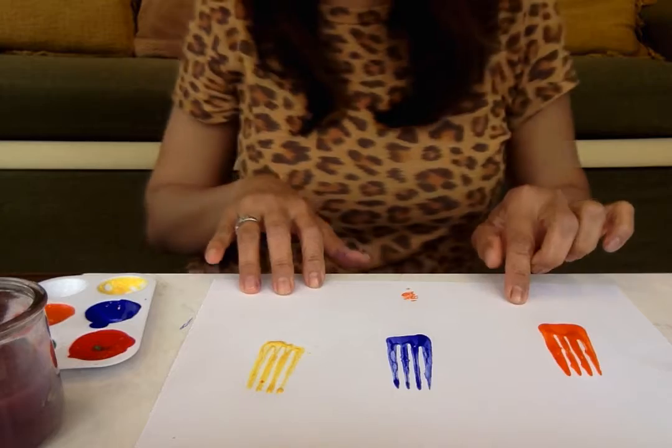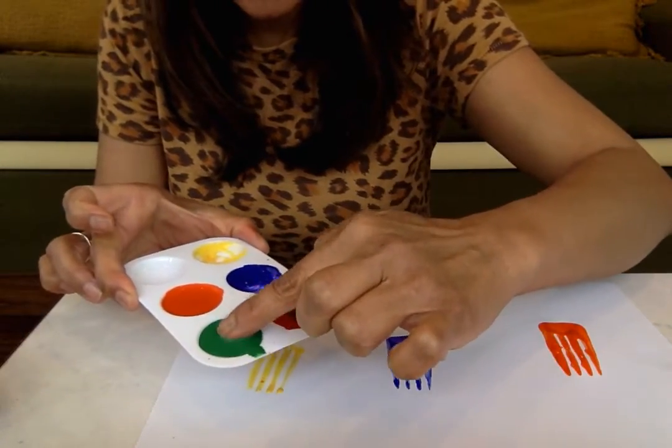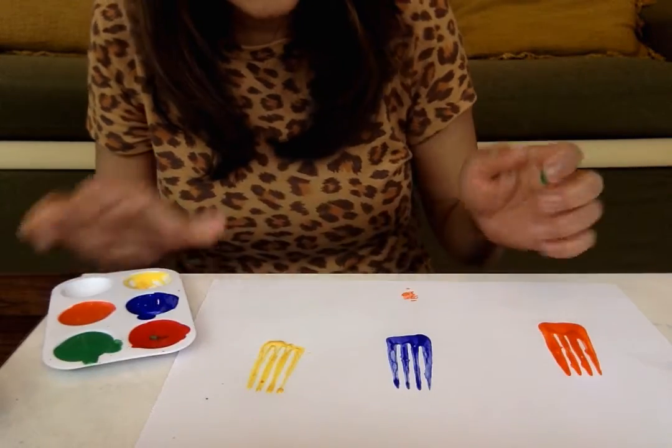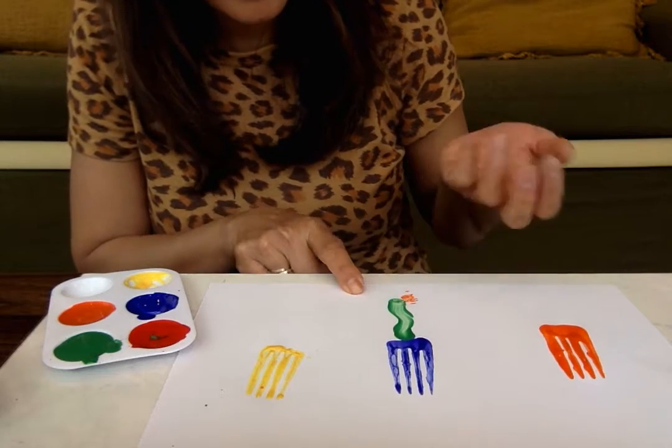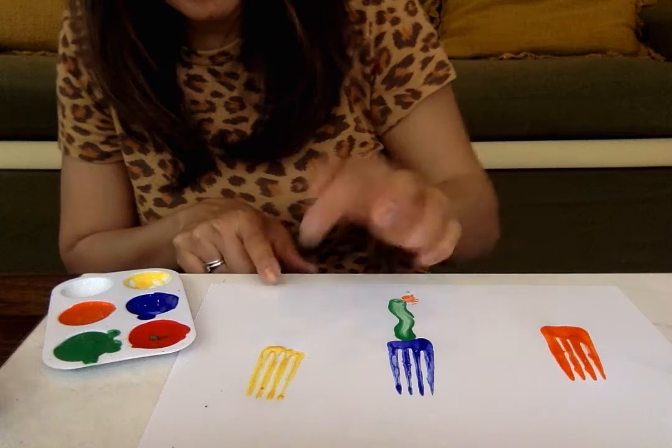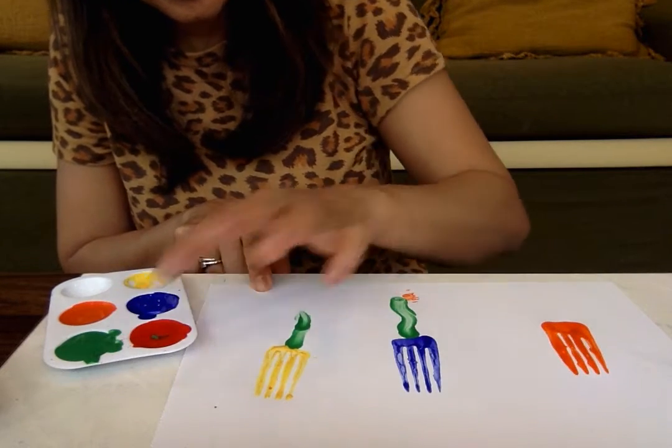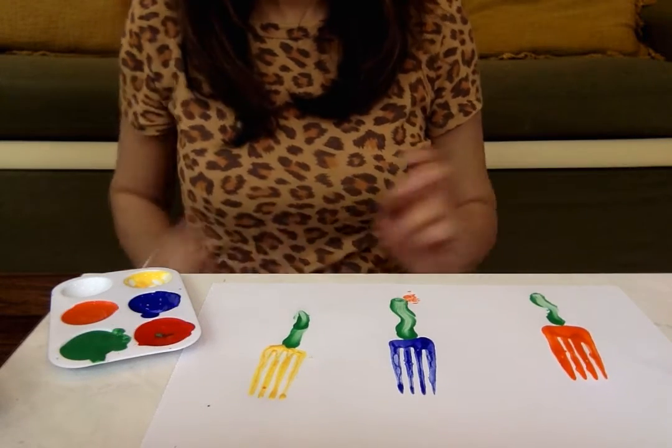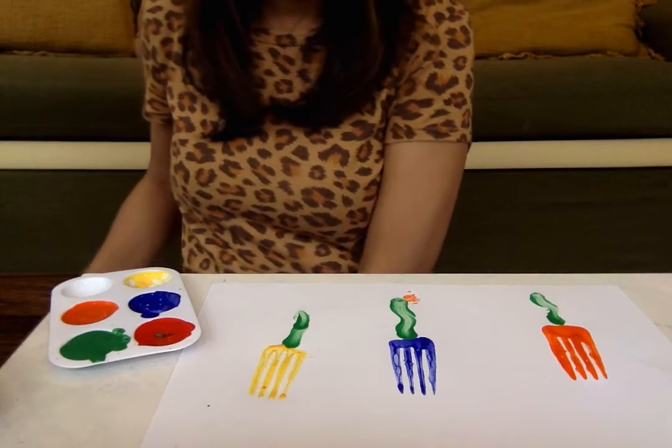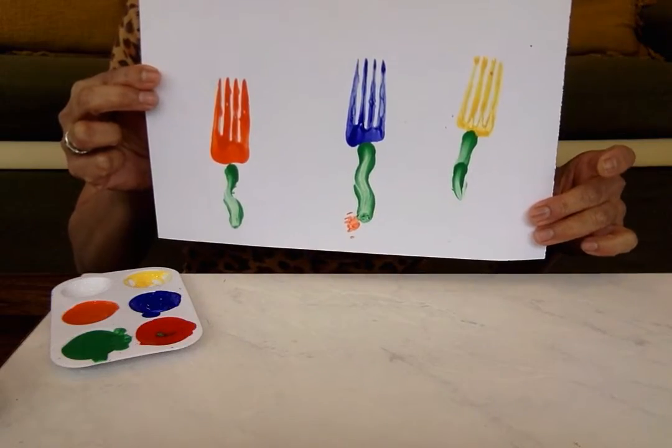Now we need a stem to come down. I'm going to use my finger and put some green and make a little stem coming from it. I've got three flowers.